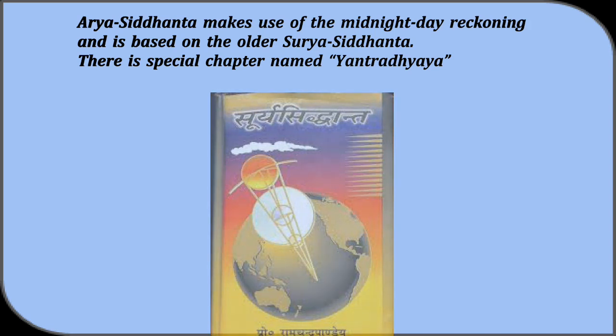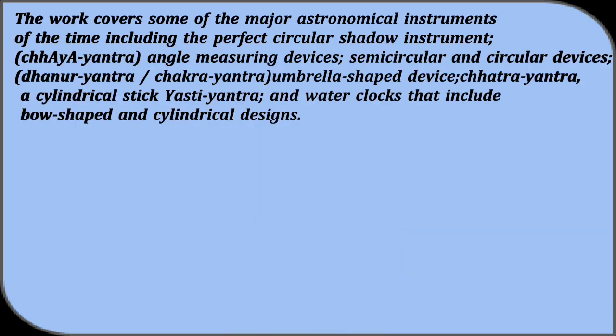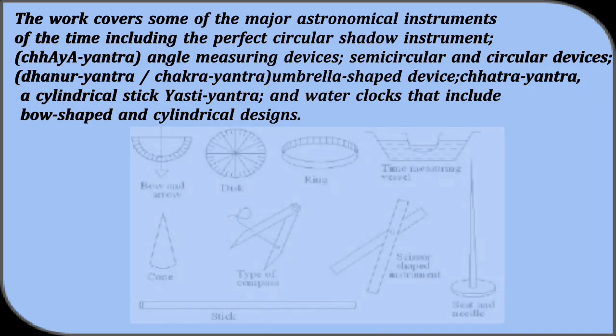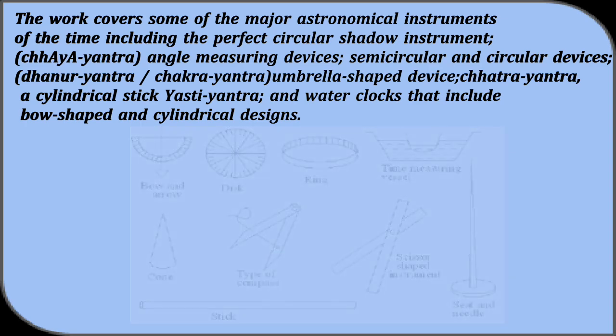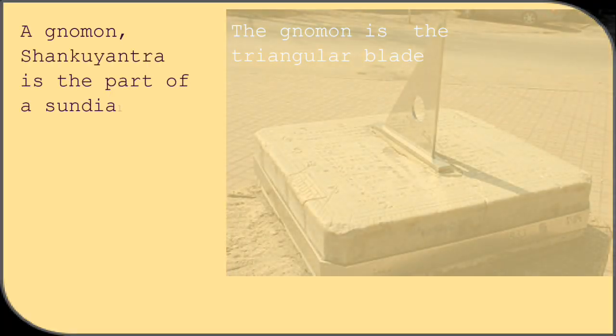There is a special chapter named Yantra Adhyaya. The work covers some of the major astronomical instruments of the time including the perfect circular shadow instrument, Chaya Yantra, Angle Measuring Devices, Semi-Circular and Circular Devices, Dhanur Yantra, Chakra Yantra, Umbrella Shaped Device, Chhatra Yantra, A Cylindrical Stick, Yasti Yantra and Water Clocks that include bow shaped and cylindrical designs.